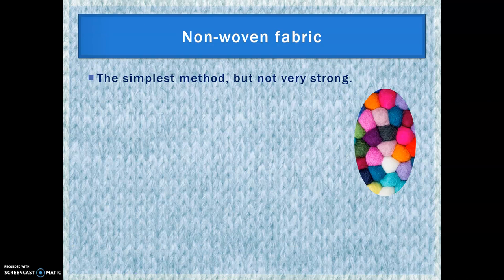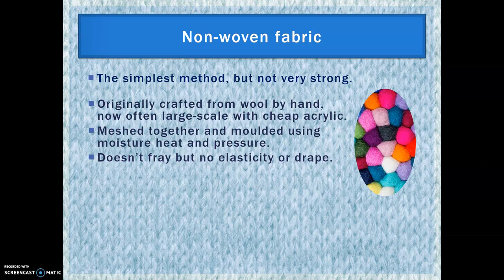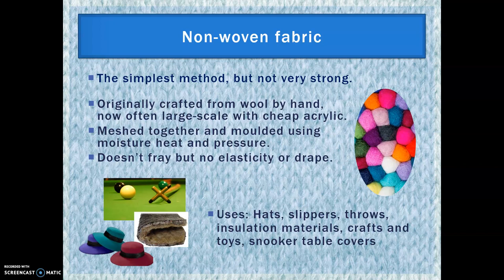Next, non-woven fabrics — the simplest method, but not very strong. Originally crafted from wool by hand through a process called carding, now often made large-scale with cheap acrylic fibres. Fibres are meshed together and moulded using moisture, heat and pressure to create felt. It doesn't fray, but has no elasticity or drape. It tends to be used for hats, slippers, throws, insulation materials, crafts, toys and snooker table covers.